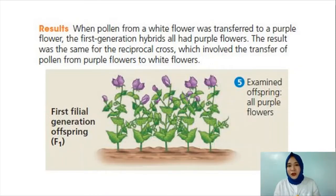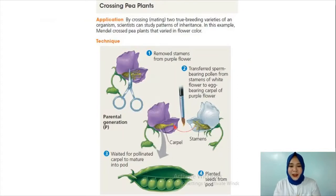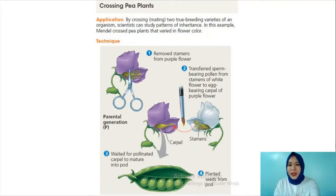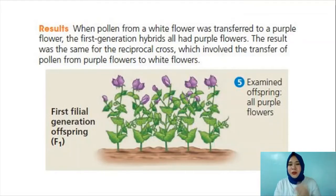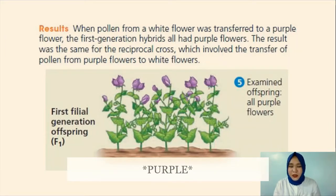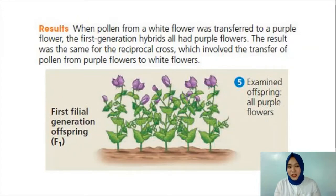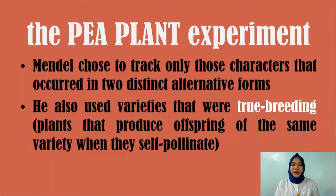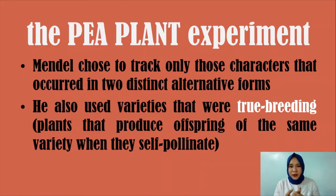He also did a reciprocal cross — the other way around — where the pollen from the purple flower was transferred to the carpel of the white flower. He still found that all of the hybrids or offspring had white flowers. These hybrids are called the first filial generation, or F1 generation. Mendel chose to track only those characters that occurred in two distinct alternative forms — for example, only purple or white flower color. He also used varieties that were true breeding, meaning plants that produce offspring of the same variety when they self-pollinate.